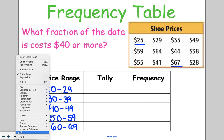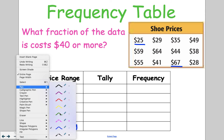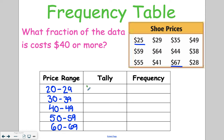Now you're going to go through again and make those tallies. So we've got $25, $29, $35, $49, $59, $64, $44, $38, $55, $41, $67, and $28.